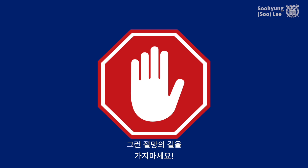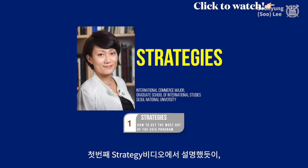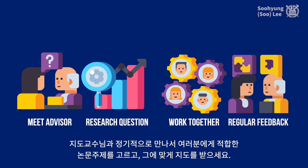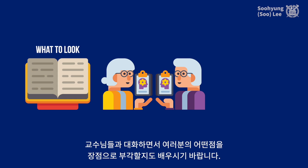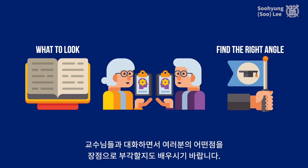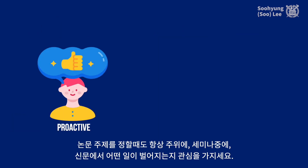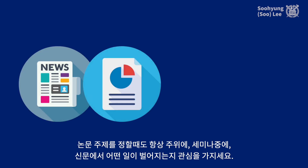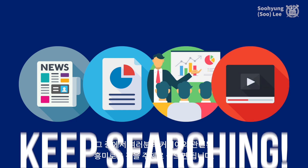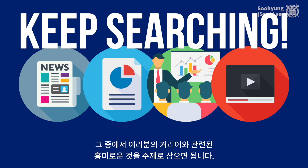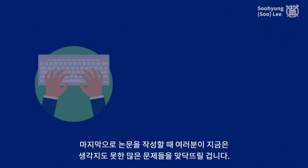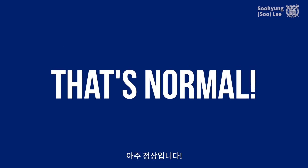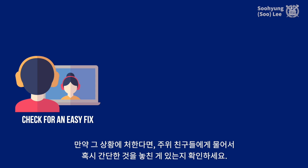Do not go down that miserable path. As I emphasized strongly in my first video: set up a meeting with your advisor, identify the right research question for you, and closely work with your advisor to get regular feedback. Your advisor will know what papers are out there and help you find the right angle so you can claim the novelty of your work. Second, you have to be proactive and vigilant to find your research area of interest. You need to read newspapers, academic papers, attend seminars, and so on, so that you can find an interesting and important recent research topic that is closely related to your interest and also your career plan. Once you start writing your paper, you will face a lot of obstacles in the process — that is very normal. If that happens, talk to your fellow students to see if you can make any easy and obvious fix.